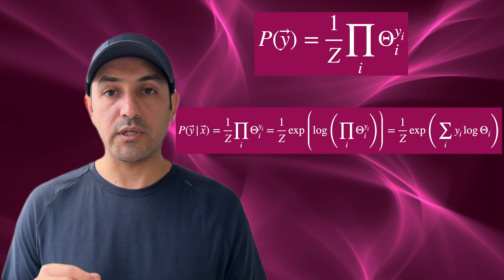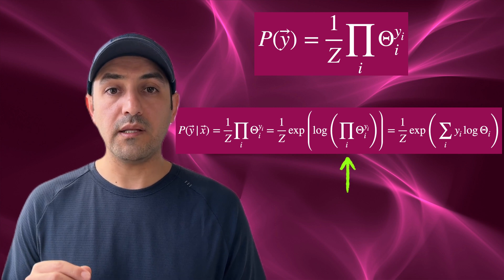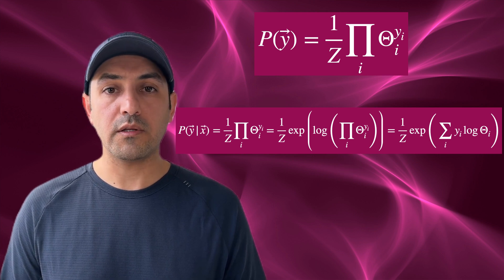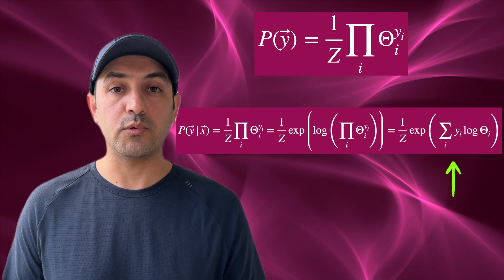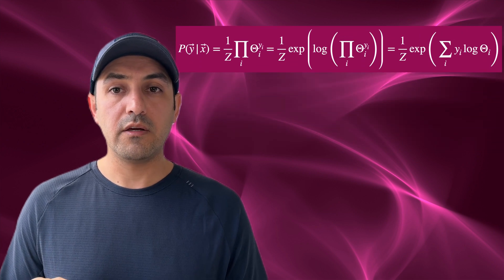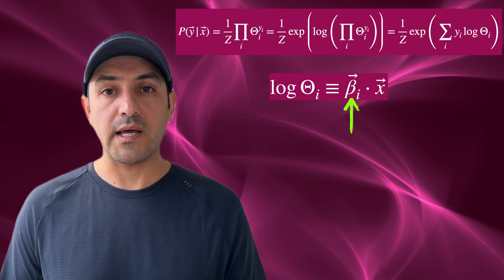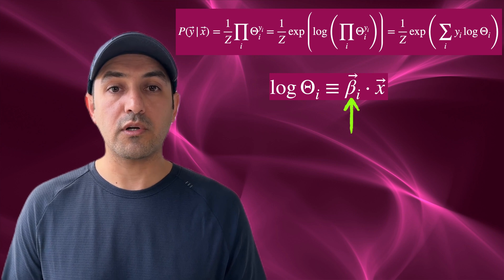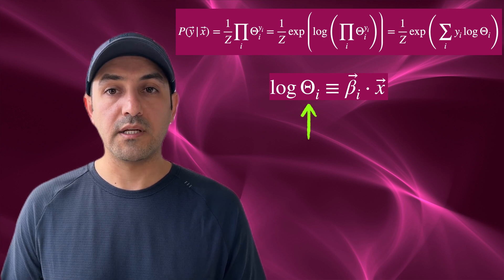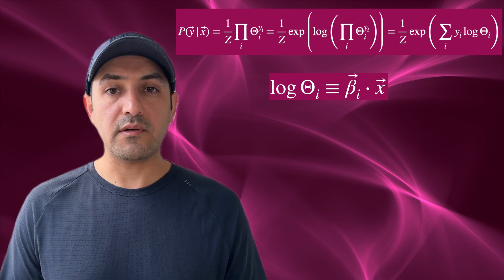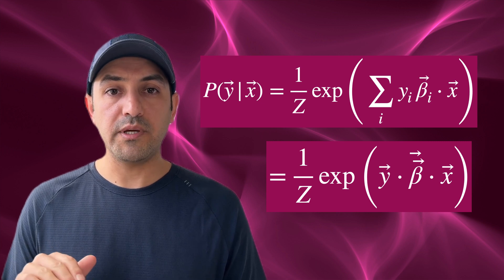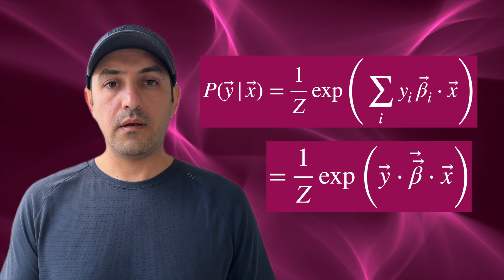We now use a trick: the exponential of the logarithm of anything is equal to itself, so we reformulate the probability in this form. Now the logarithm of a few terms multiplied by each other is equal to the sum of the logarithm of each one of them. For classification in machine learning, we define a vector beta for each class and dot product it with the predictor columns of our spreadsheet, and define that to be the logarithm of the probability of that class, which is theta. So after replacing the thetas, here is the probability. Note that in the matrix form, beta is a matrix with each row being the coefficient of one of the classes.